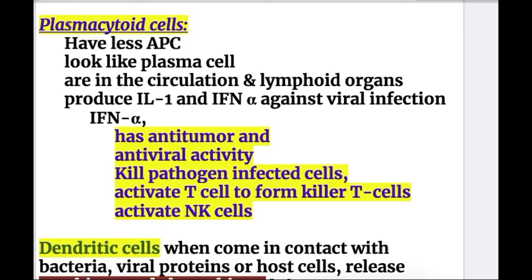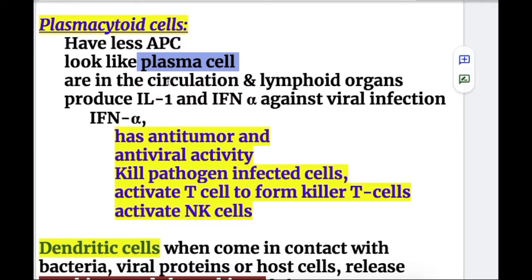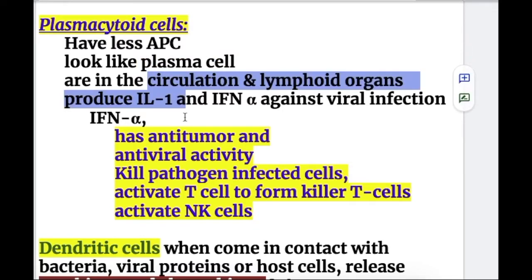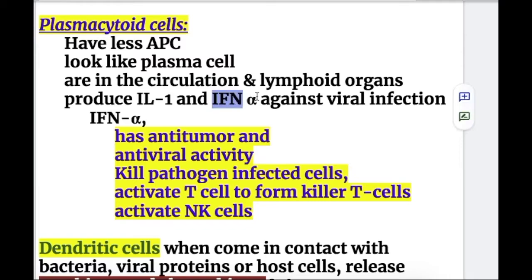The other type of dendritic cell — plasmacytoid cells — have less antigen presenting cell activity and look like plasma cells. They are found in circulation and lymphoid organs, and they produce interleukin-1 and interferon alpha, particularly against viral infection.